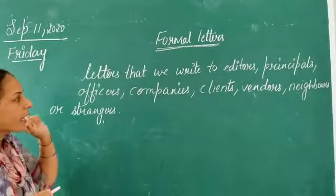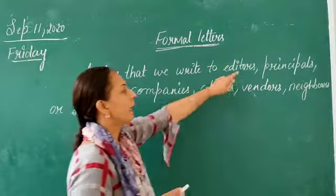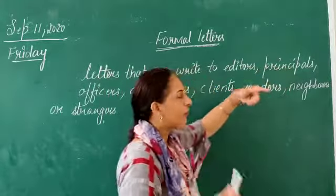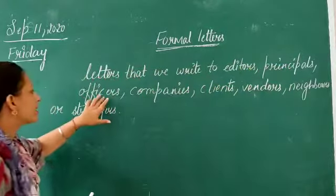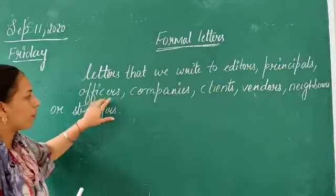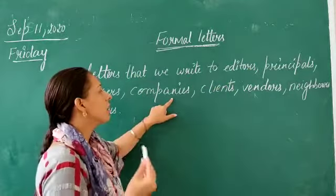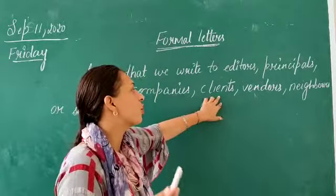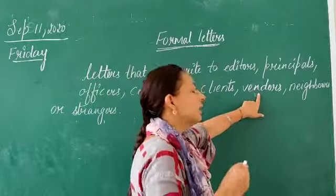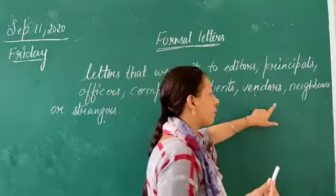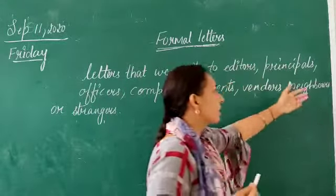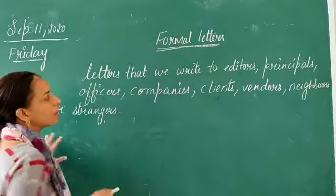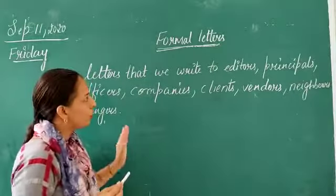Formal letters are written to editors — those who write the newspapers. Principals, as you already know, are the school heads. Officers are the main authority figures. Companies are any businesses. Clients are those who deliver things from one place to another. Vendors are people who have a business selling goods. Neighbors are people around you, and strangers are people not known to you.